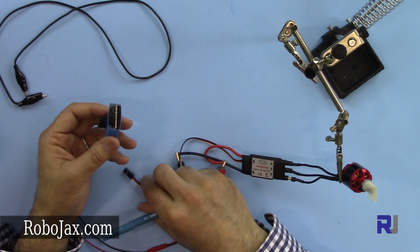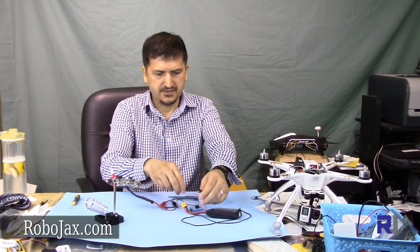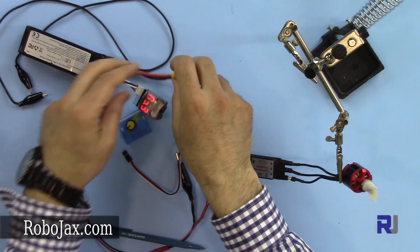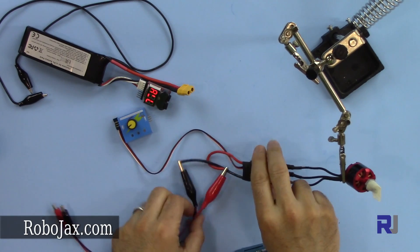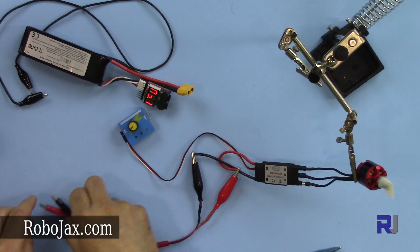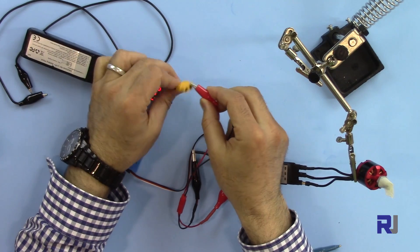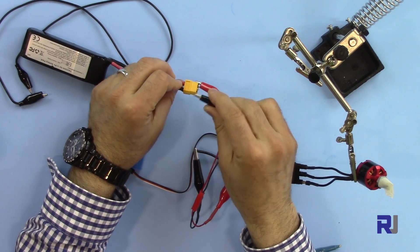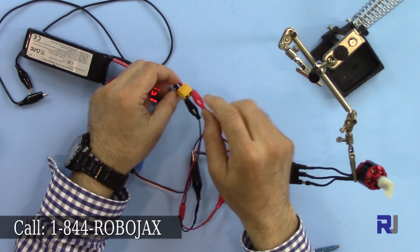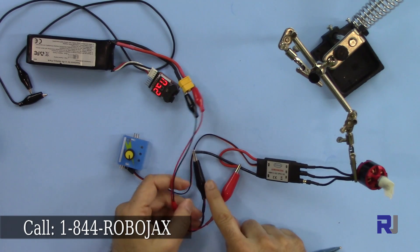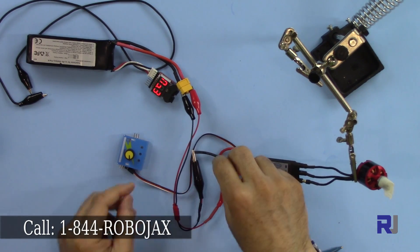I have here a battery, a 3 cell battery. My ESC is connected to this cable, so I'm going to connect it to my battery. So I connect the battery to the ESC.